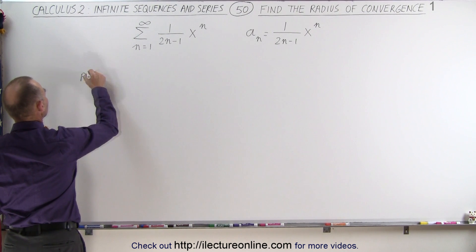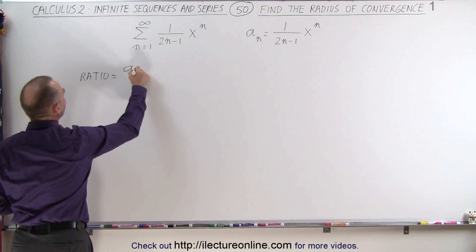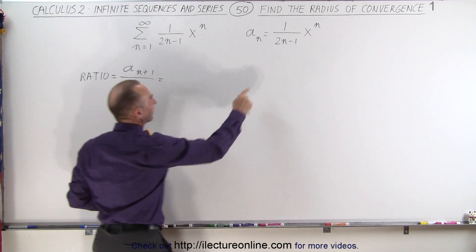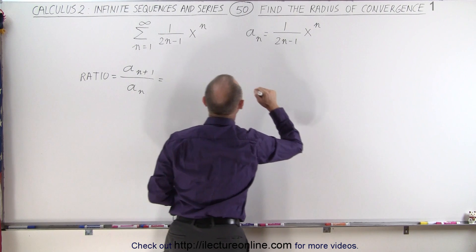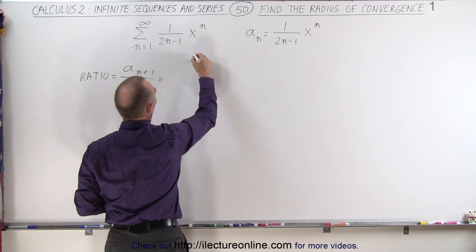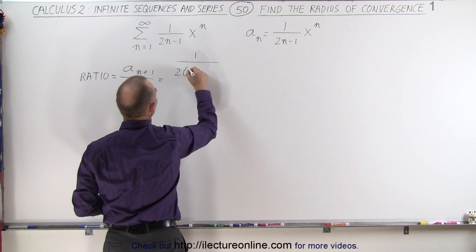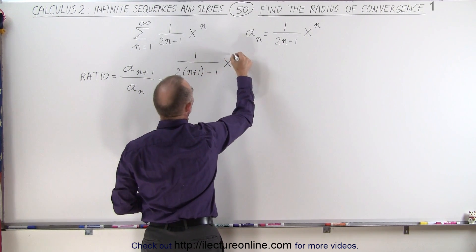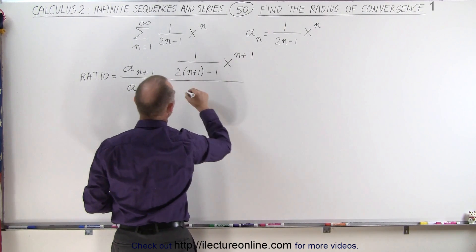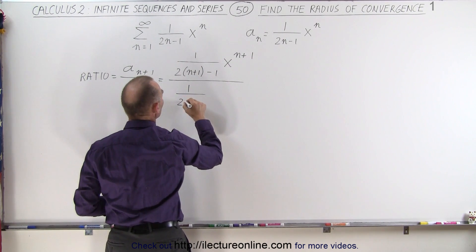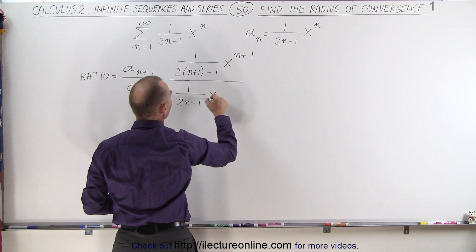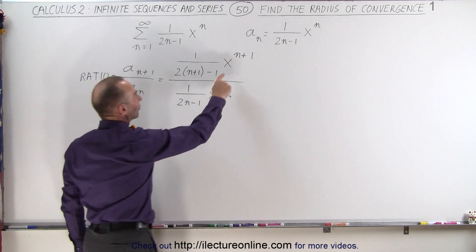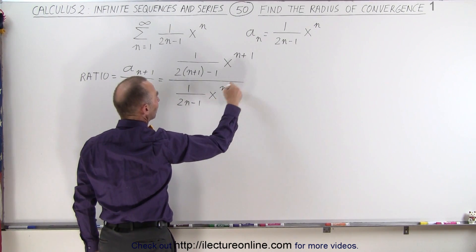The ratio will be equal to a sub n+1 divided by a sub n. So we take this term, add 1 to every one of the n's, and we get 1 divided by (2(n+1) minus 1) times x to the n+1 power, divided by 1 over (2n minus 1) times x to the n. The x part is easy: x to the n+1 divided by x to the n is simply x.